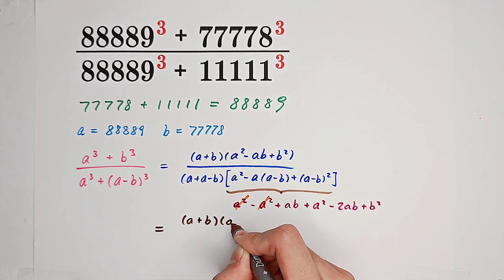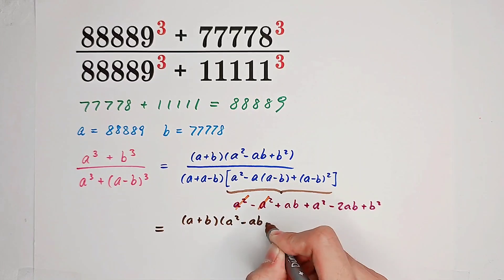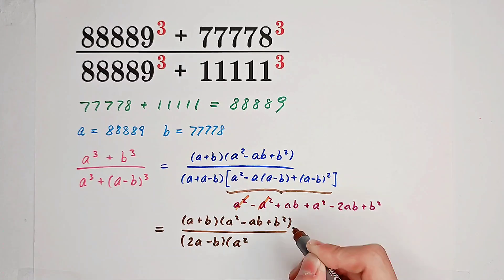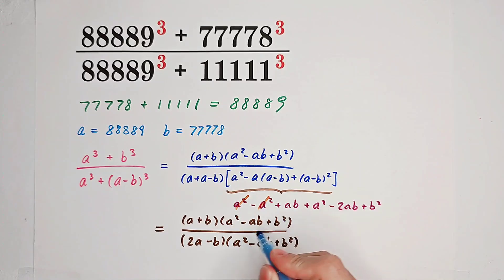It is A plus B times A squared minus AB plus B squared over 2A minus B times A squared minus AB plus B squared. Now you can see A squared minus AB plus B squared appears in the numerator and in the denominator, so we can cancel them.